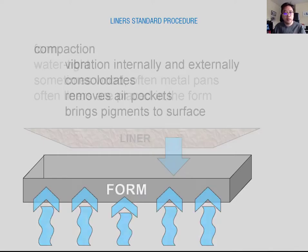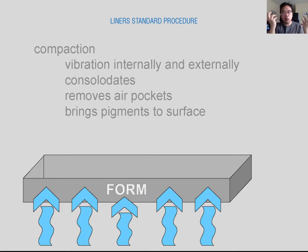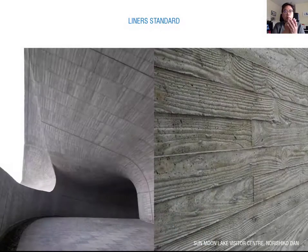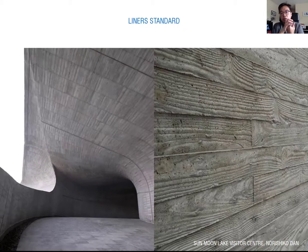You can choose the proper design depending on your design concept. To remove the precast concrete from the foam, you need to vibrate internally and externally. The vibration removes air pockets and consolidates the concrete — this gives the extra strength. From this process, you can see the texture, such as from the Sun Moon Lake Visitor Center, which is a very interesting use of foam for concrete panels. In detail, you can see a wood plank texture.